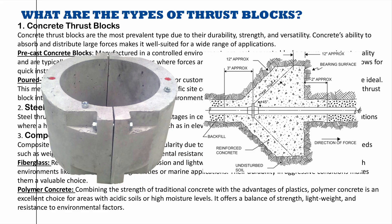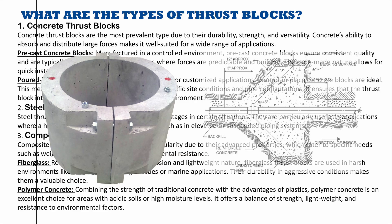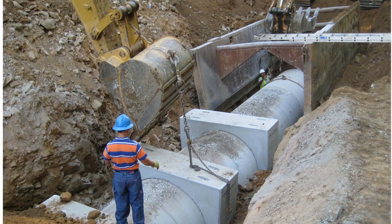Concrete thrust blocks can be precast — manufactured in a controlled environment. Precast concrete blocks ensure consistent quality and are typically used in standard applications where forces are predictable and uniform. Their pre-made nature allows for quick installation and reliable performance. For more complex and customized applications, poured-in-place concrete blocks are used. This method allows for a tailored fit, adapting to specific site conditions and pipe configurations, ensuring the thrust block integrates seamlessly with the surrounding environment.